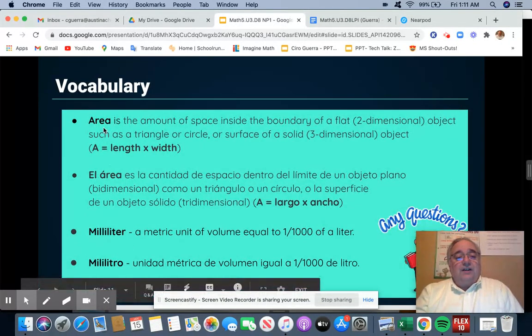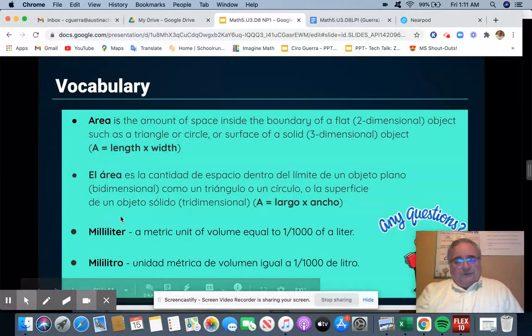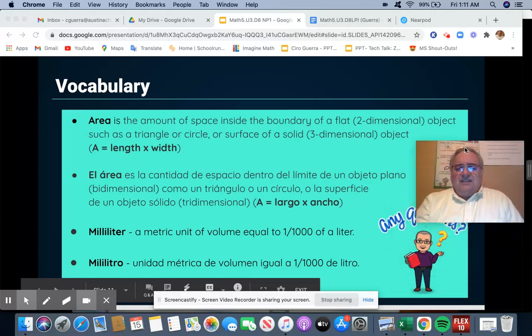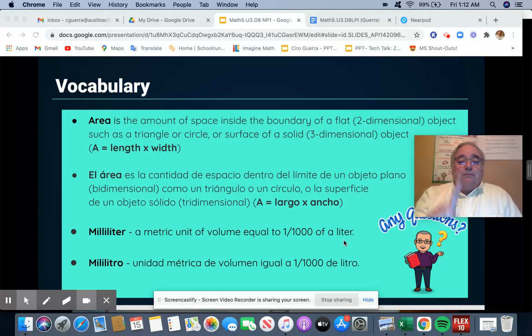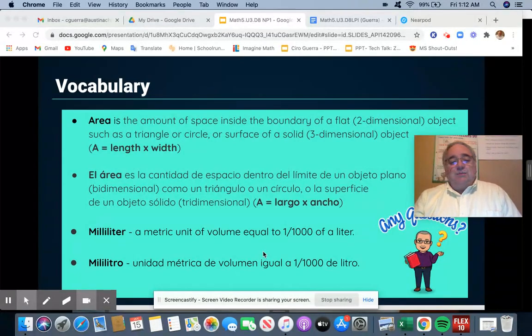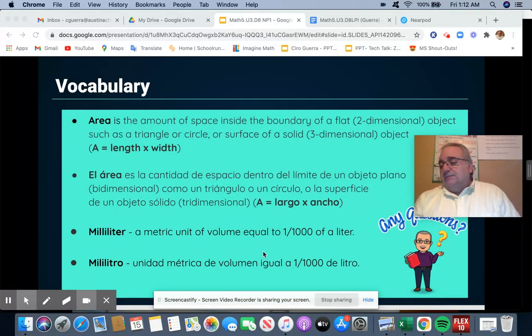The next one has area. Area is defined as length times width. And the new word that we have here is milliliter. Milliliter is a metric unit of volume equal to one one-thousandths of a liter. That means it takes one thousand milliliters to make a liter. I'm going to wait about 20 seconds so that you can write this down in your notebook. You should be writing down milliliter, a metric unit of volume equal to one one-thousandths of a liter. You have about 10 more seconds.